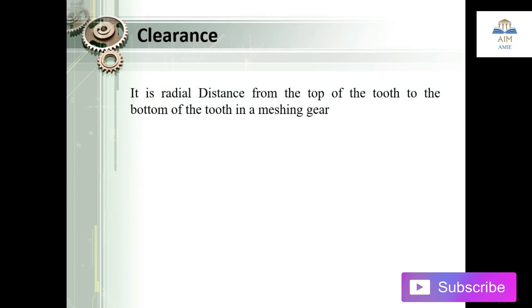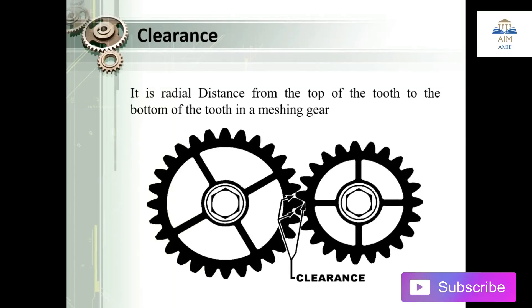The next one is the clearance. Clearance is the radial distance from the top of the tooth of one gear to the bottom of the tooth of the mating gear. So it is the space from the top of one gear's tooth to the bottom of the meshing gear's tooth.